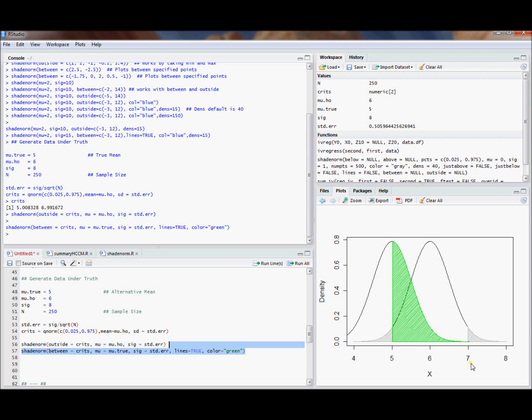What we've done here, and this is actually kind of an interesting exercise, is we've illustrated both the type 1 error, the probability of a type 1 error, in the gray, under the null distribution. And we've illustrated the probability of a type 2 error, in the green, under the alternative distribution. So this is one application of my shade norm command.